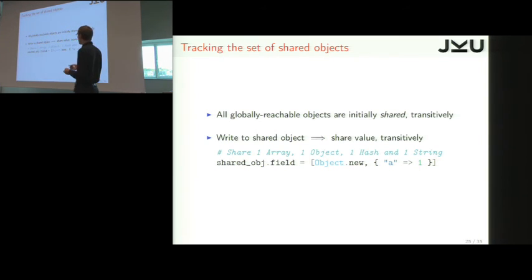And so here, when you write to a shared object, we will need to share the value, but not only the value, whatever also it references. So here, we share an array, and then inside an instance of object, then a hash, then the key, because it is also mutable.